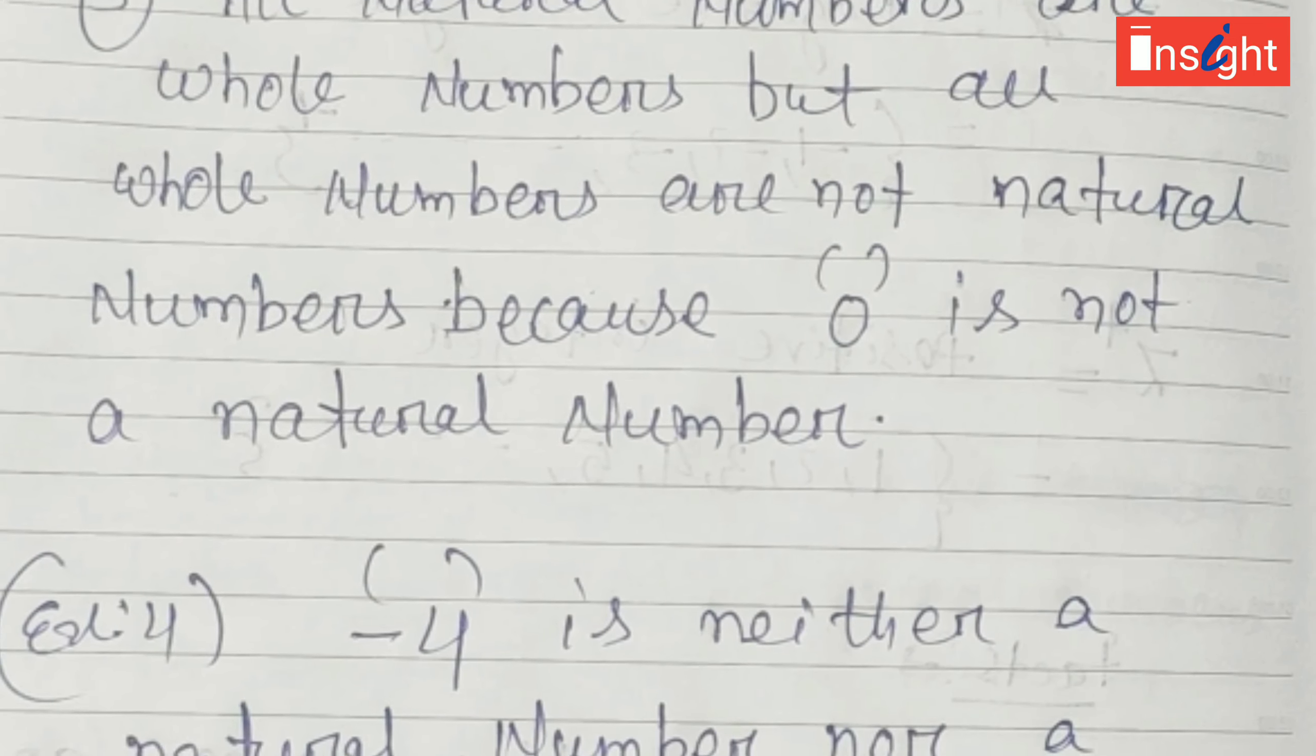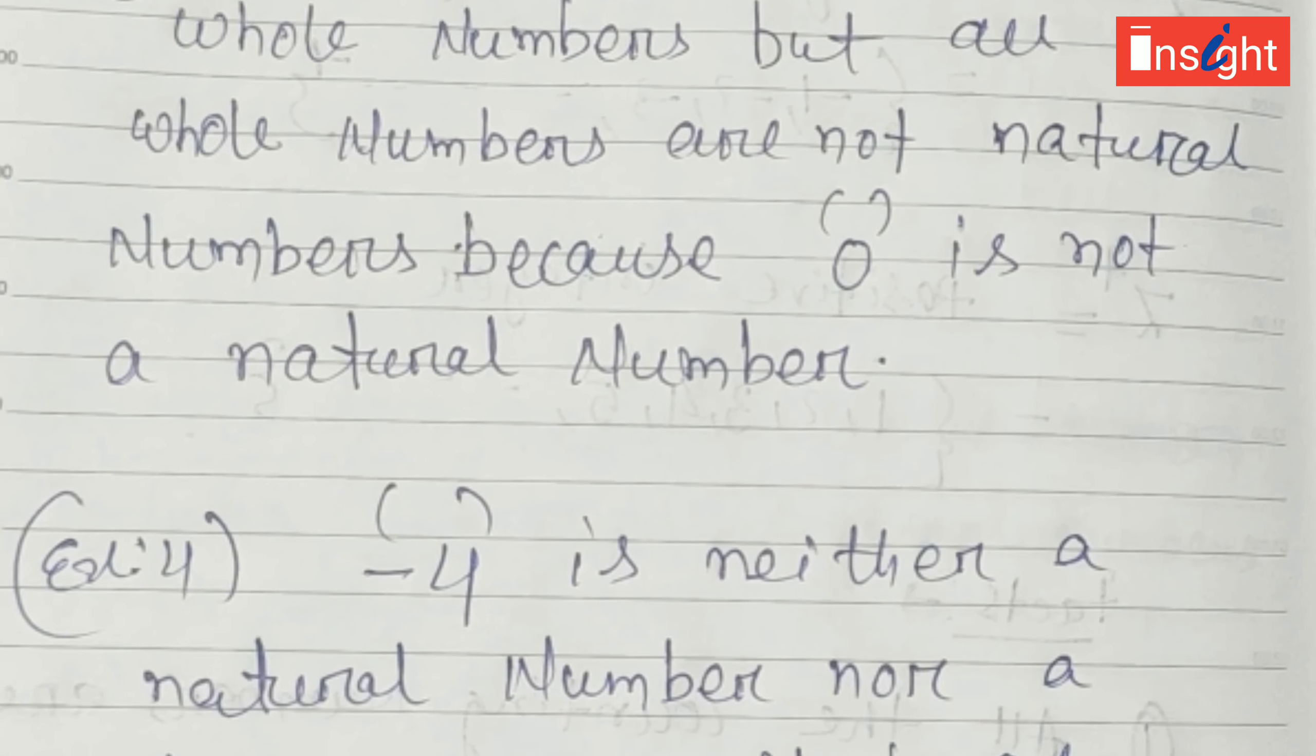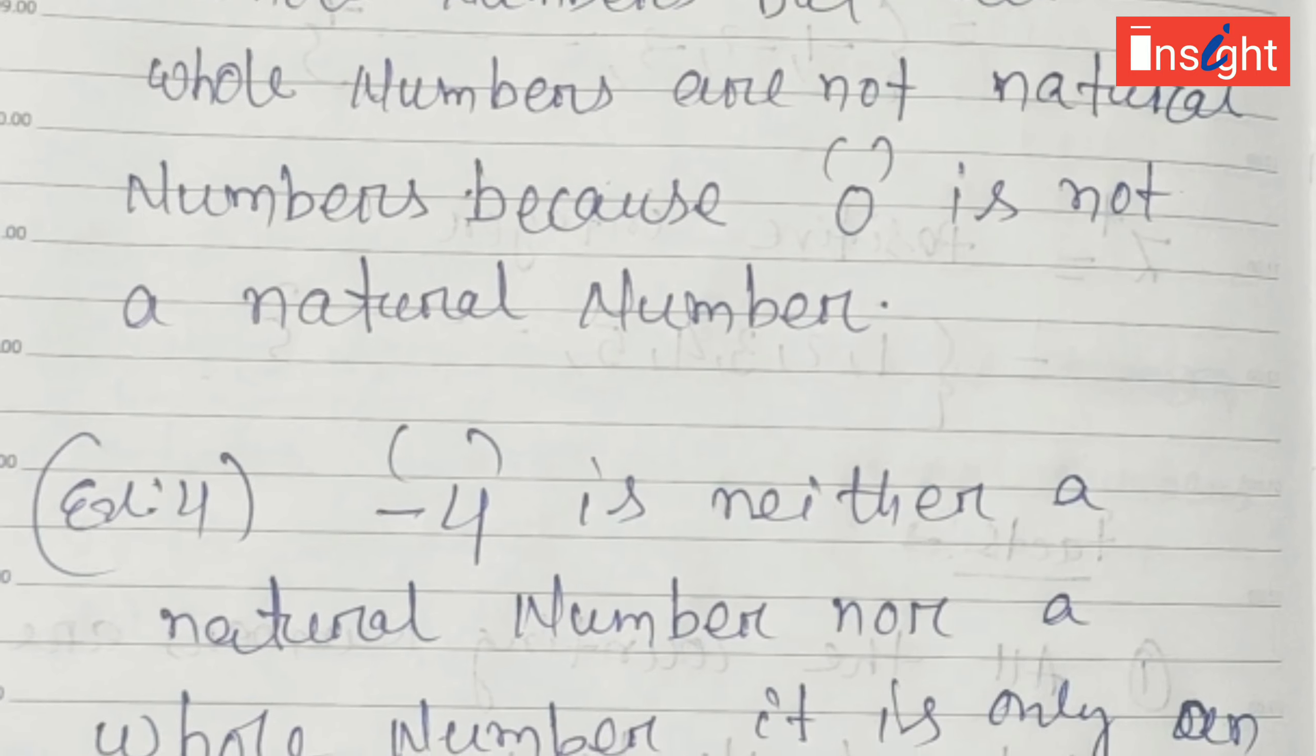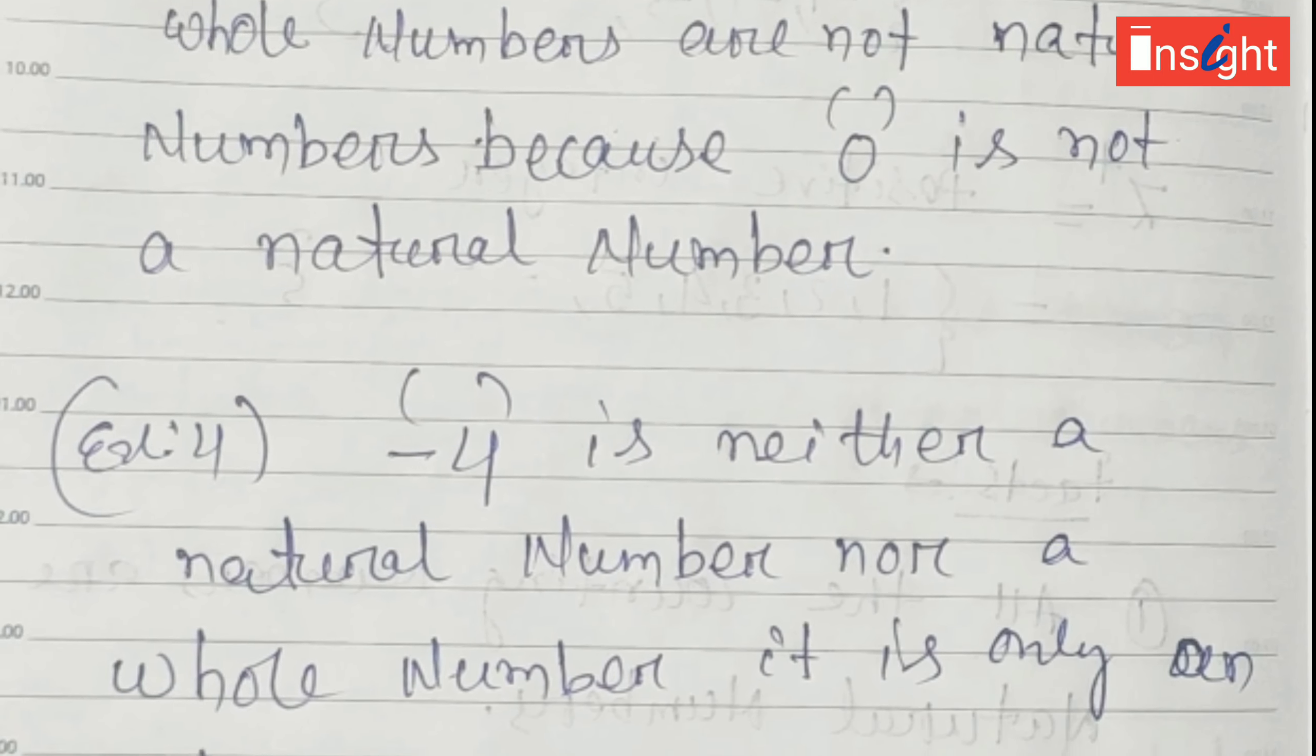Similarly, all the natural numbers are whole numbers, but all the whole numbers are not natural numbers because zero is not a natural number.